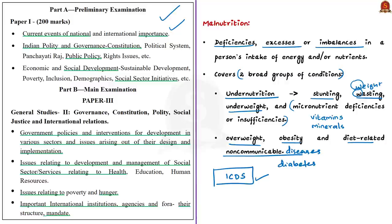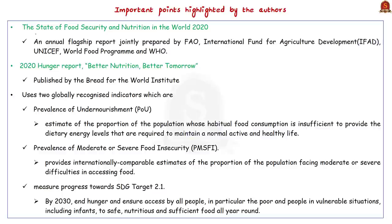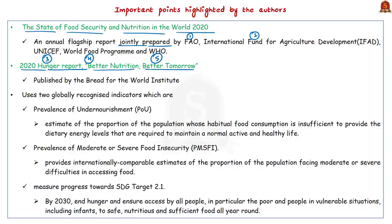The authors take examples from global studies to show the real picture of grave malnutrition in India. They bring in findings from two recent reports: one is the annual flagship report on the State of Food Security and Nutrition in the World 2020, jointly prepared by FAO, IFAD, UNICEF, World Food Programme and WHO. The other is the 2020 Hunger Report titled 'Better Nutrition, Better Tomorrow,' released by Bread for the World Institute — not to be confused with the Global Hunger Index report released by Concern Worldwide and World Hunger Health.